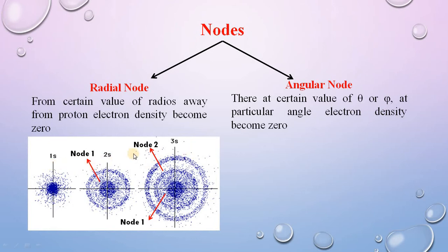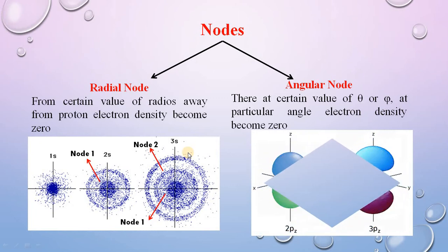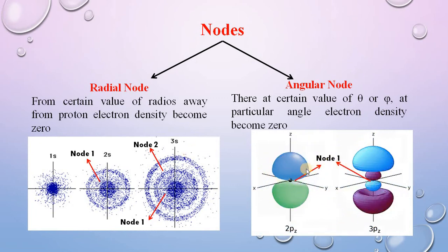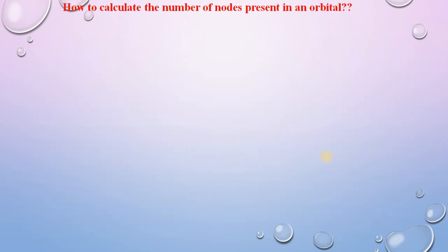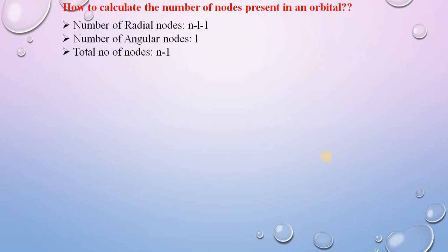This is the pictorial representation of the angular node. Around a certain angle, the electron density of the 2pz and 3pz orbitals becomes zero — this is called the angular node. For 2pz there is only one angular node, and for 3pz there is also only a single angular node. We will now see how to predict the number of nodes present in any orbital.